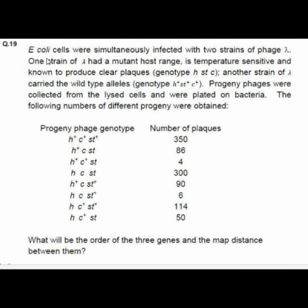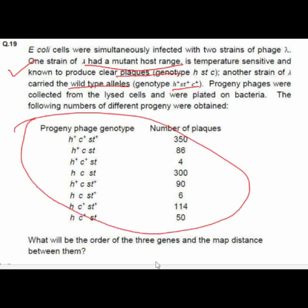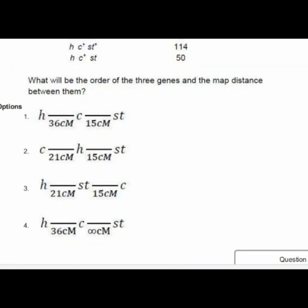Question 19 involves E. coli cells co-infected with two strains of lambda phage: one mutant strain with host range, temperature-sensitive, and clear plaque genotype (h, s, t, c), and another wild-type strain (h+, s+, t+, c+). Progeny phages were collected and plated on bacteria. The third option gives the correct gene order and map distances between the three genes.